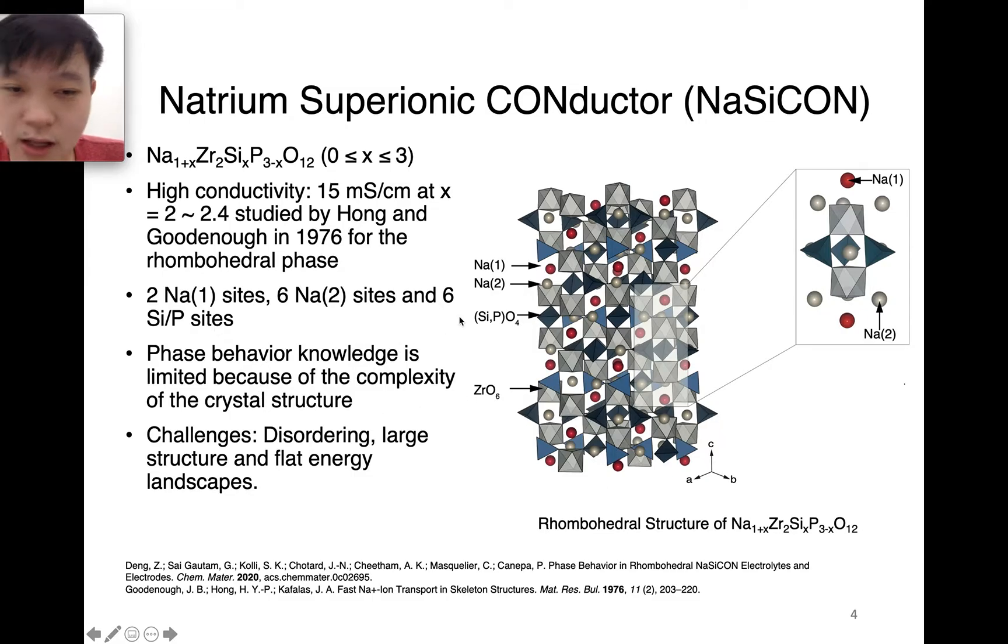As you can see, the structure is very complex, so the phase behavior knowledge is kind of limited. Although there are some experimental studies before, there are not so many computational studies on the phase behavior of these materials. It's quite challenging for computational scientists to do the modeling because it's very complex. It has disordering, lots of composition, and the structure is very large with lots of atoms inside. Also, because it's a superionic conductor, the energy landscape is very flat, which brings a lot of challenges for optimization as well.